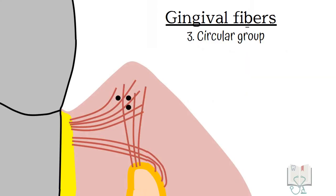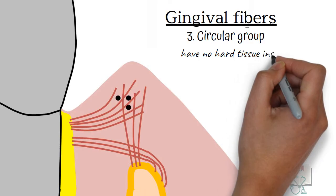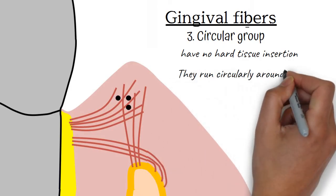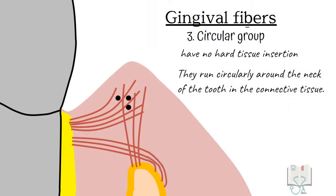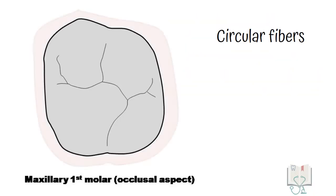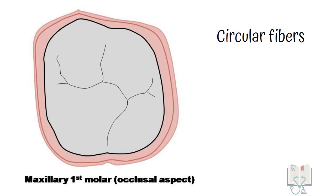Circular group. These fibers are not inserted into any hard tissue. They run circularly around the tooth. That is, from the occlusal aspect of the tooth, in the free gingiva around the neck of the tooth, these fibers run circularly.